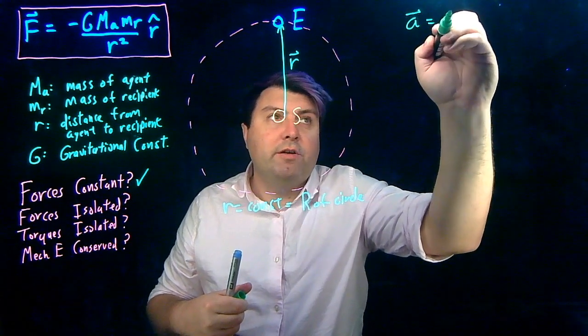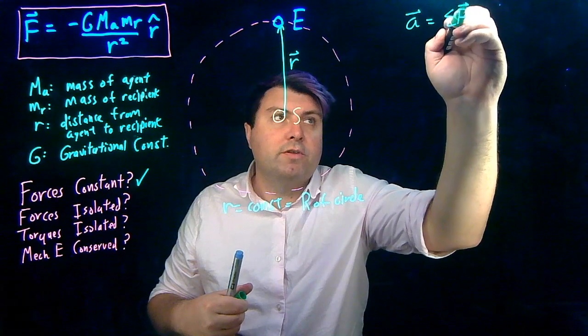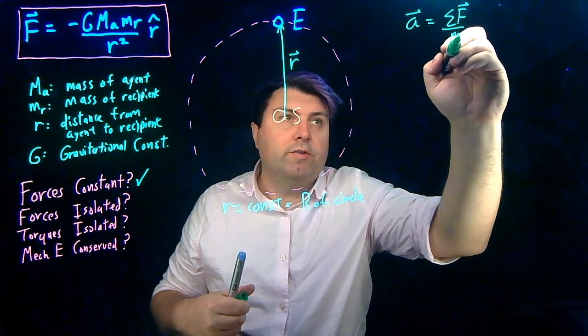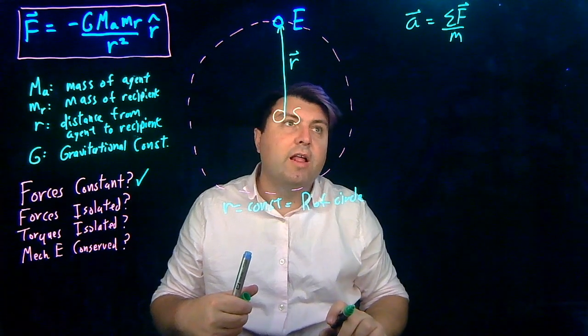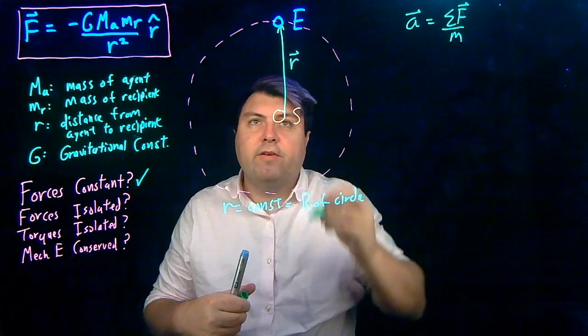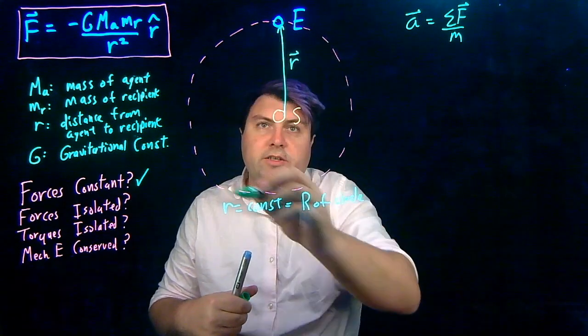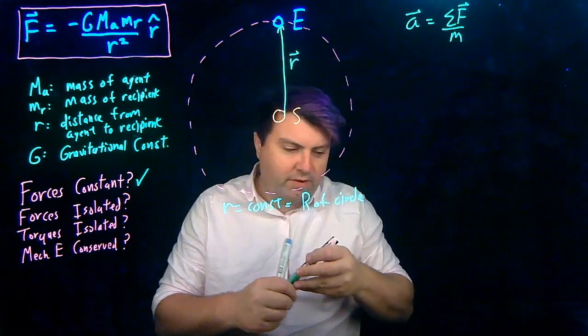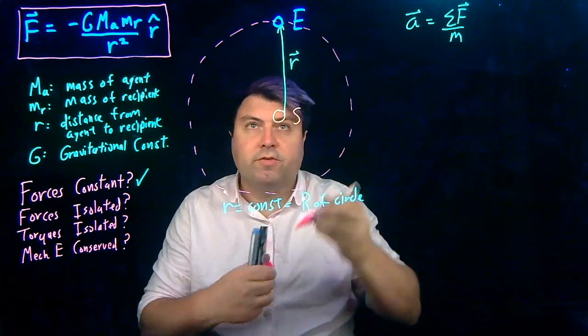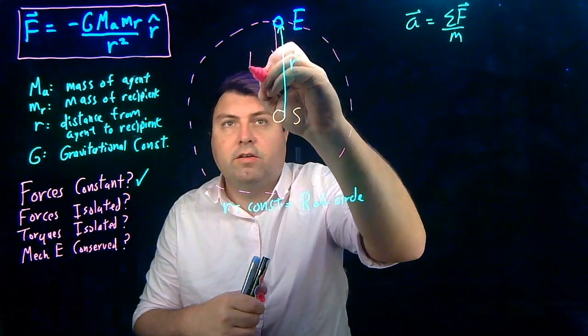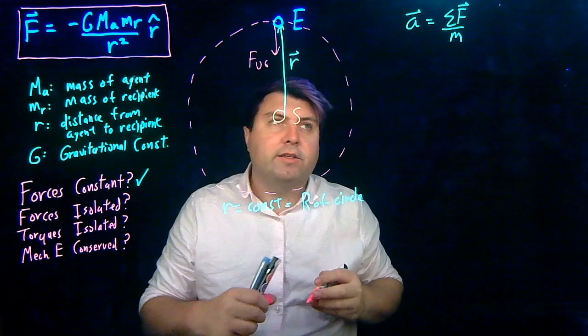Our acceleration is equal to the sum of the forces over the mass. We can start using Newton's second law given this. And so we know that we only have one force on this because our Earth isn't in contact with anything as it's orbiting. It's just feeling that force of gravity acting upon it.